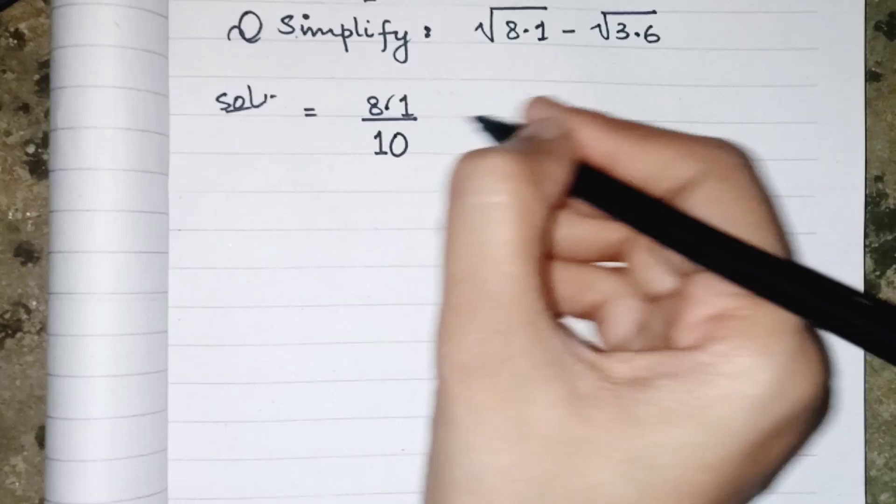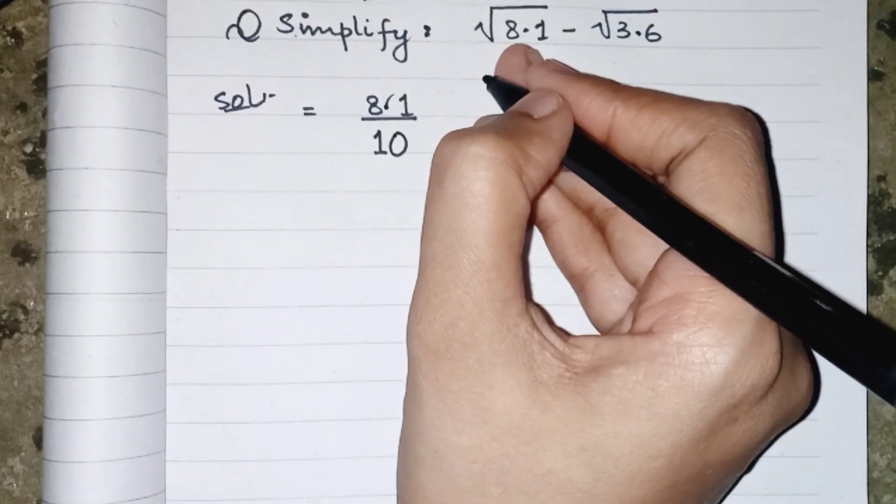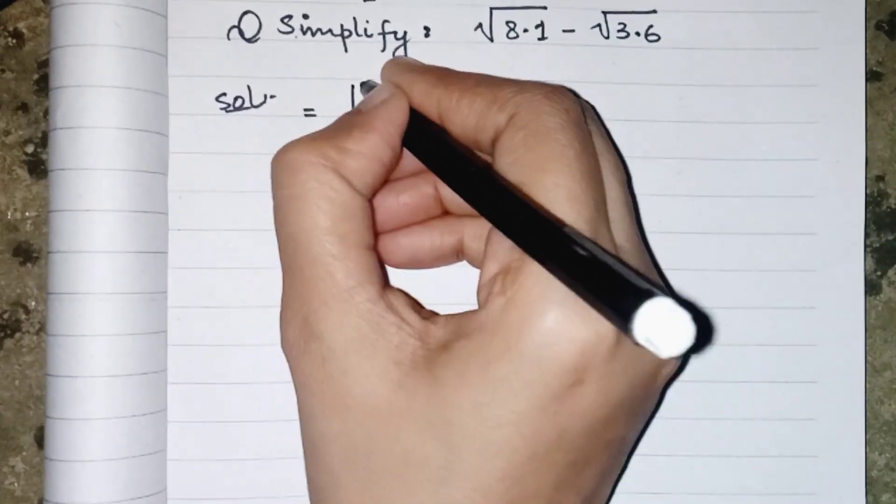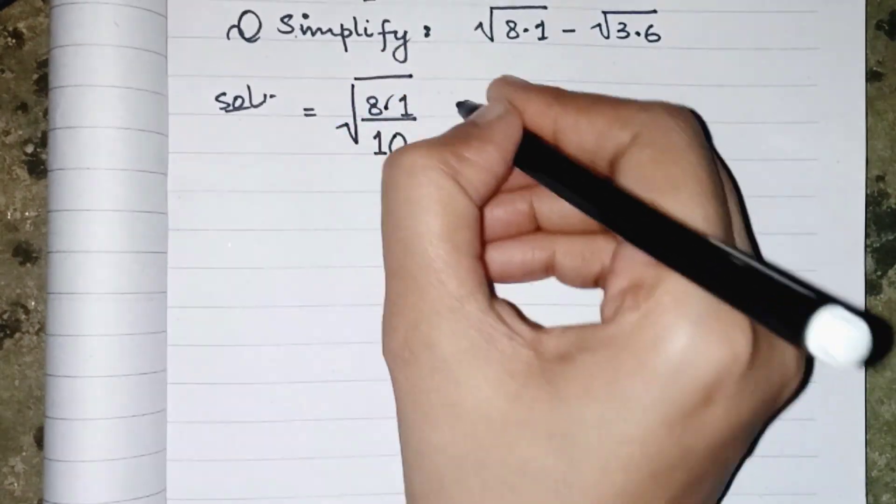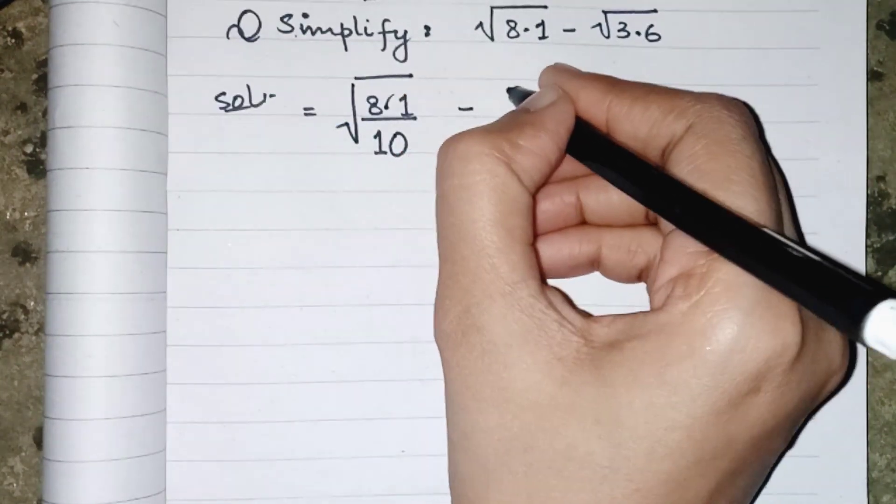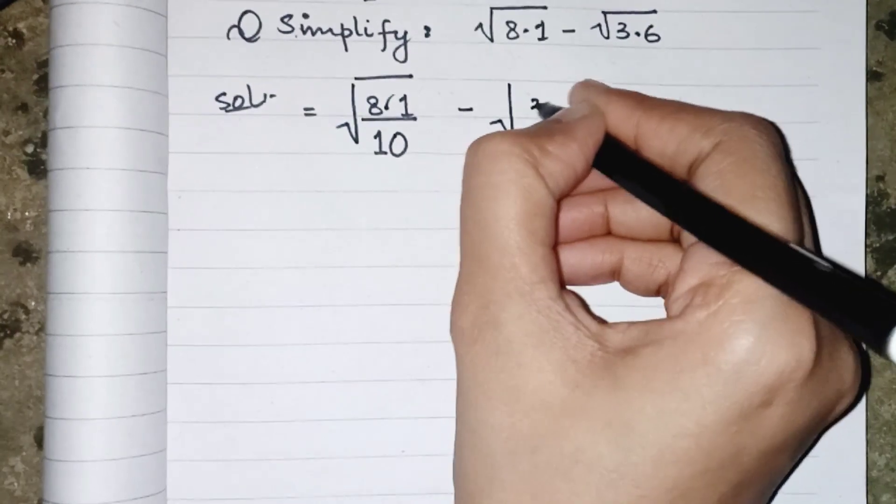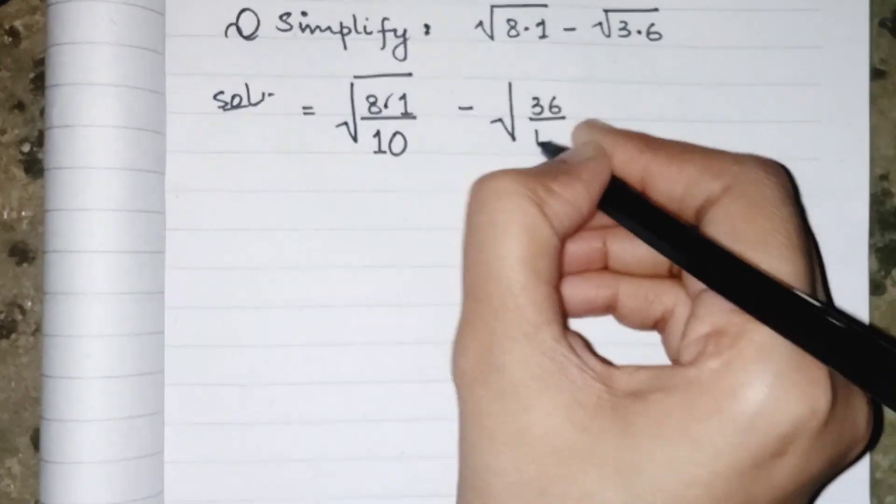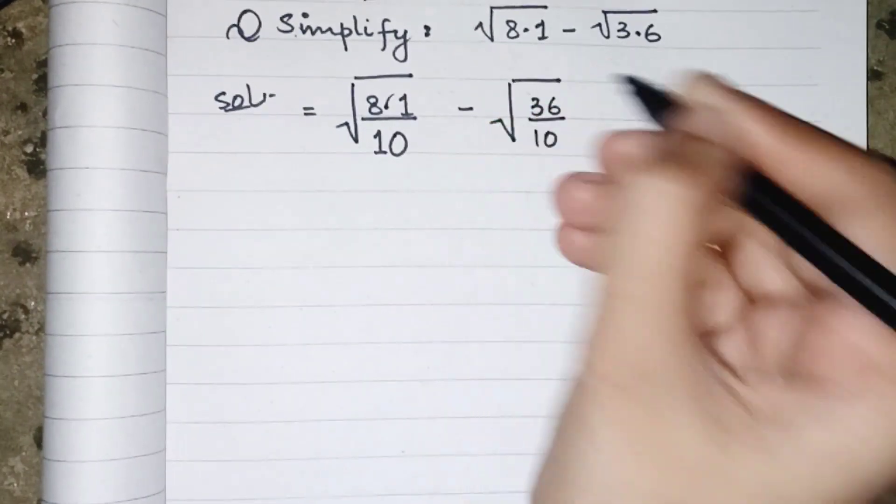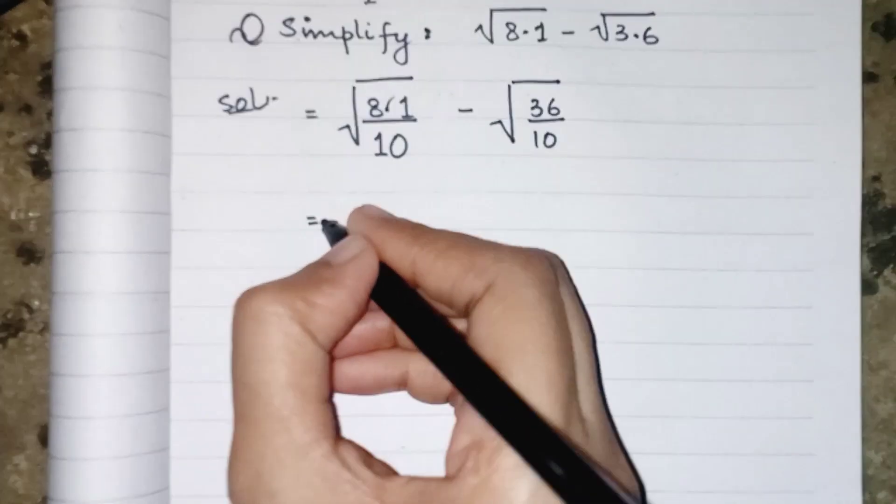This 8.1 was inside the root, so we have to place root on the whole fraction. Similarly, the same thing will be done with 3.6, so it will give us 36 upon 10.